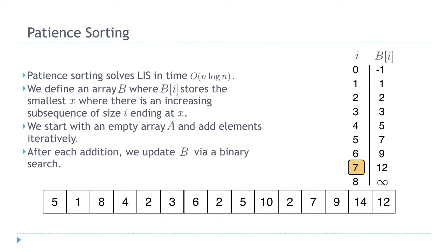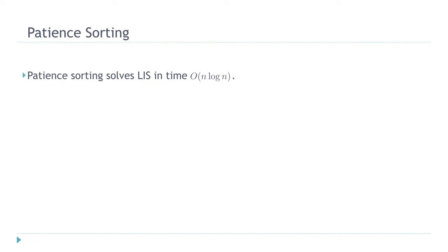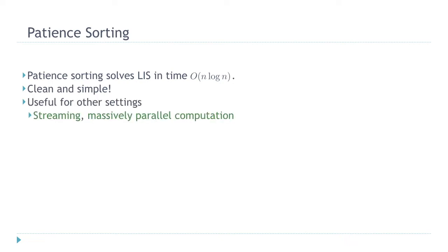In the end, we have the solution. We basically need to find the largest i such that B of i is not infinity. In this case it's equal to 7, which means that the size of the longest increasing subsequence is equal to 7. To recap, patient sorting is a very simple solution for LIS — it's very clean and easy to implement. It also has applications to other settings; there are separate works for streaming LIS or MPC LIS, and all of these works use some variance of patient sorting to find the solution.